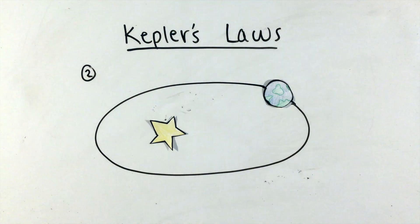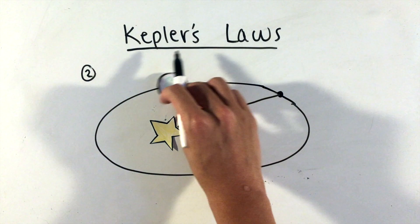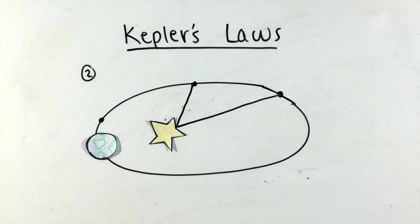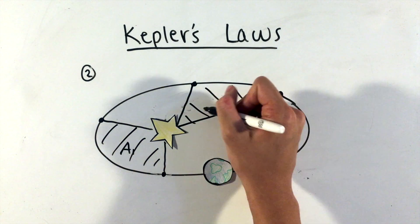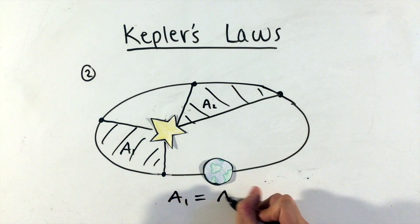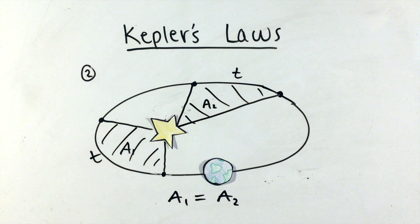His second law is derived from the conservation of angular momentum and states that planets or orbiting objects will sweep out equal areas of their elliptical paths during equal time intervals. While this law will almost never be used to actually solve problems, it's still important to understand.